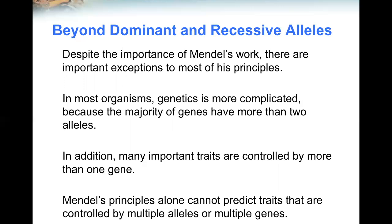To most of his principles. In most organisms, genetics is more complicated, because the majority of genes have more than two alleles. In addition, many important traits are controlled by more than one gene. Mendel's principles alone cannot predict traits that are controlled by multiple alleles or multiple genes.